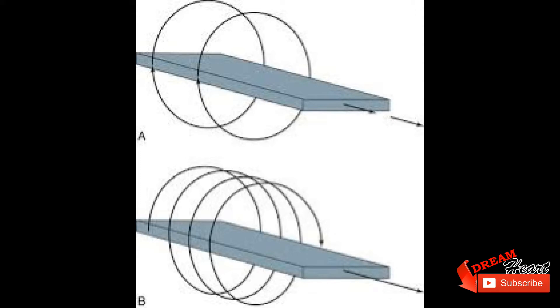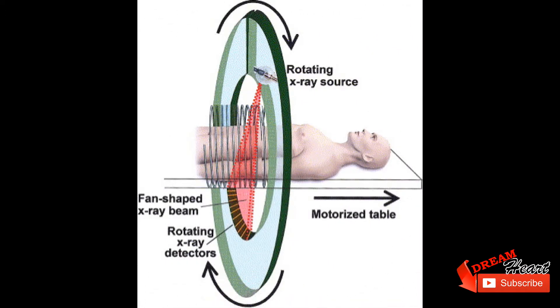In helical CT, the x-ray source is attached to a freely rotating gantry. During a scan, the table moves the patient smoothly through the scanner. The name derives from the helical path traced out by the x-ray beam.